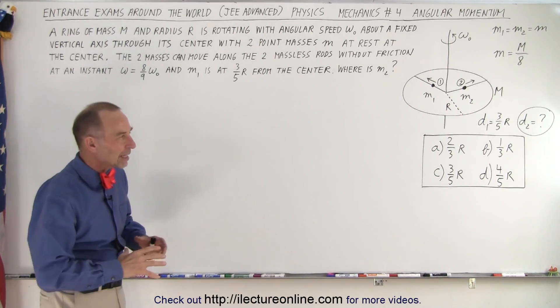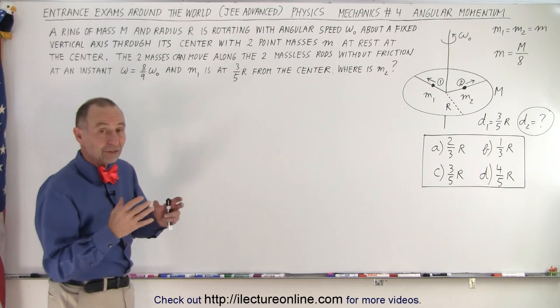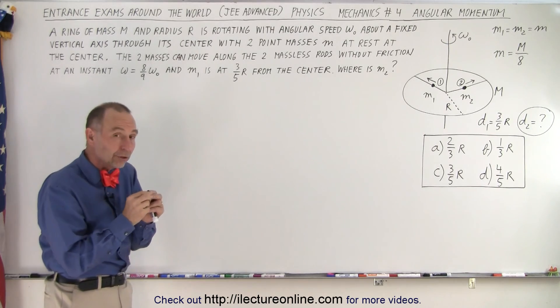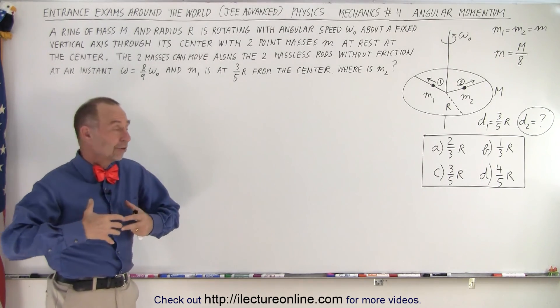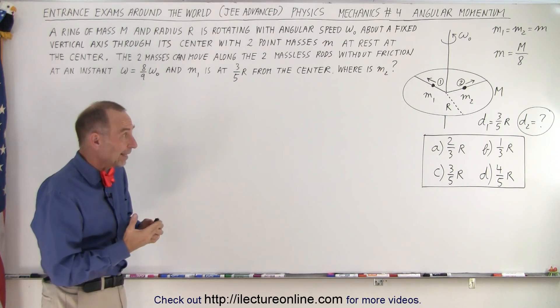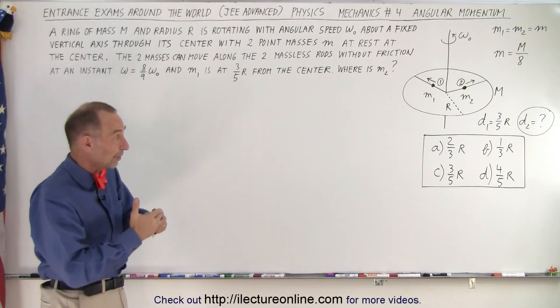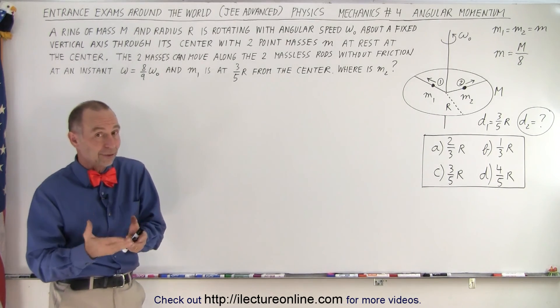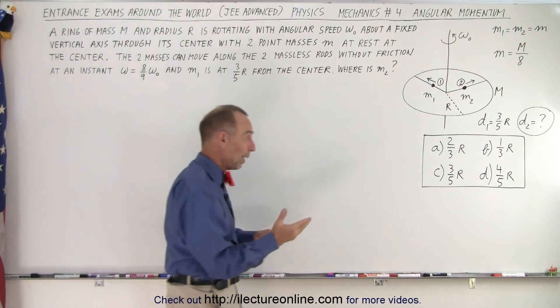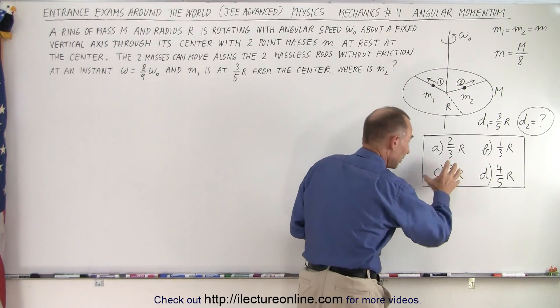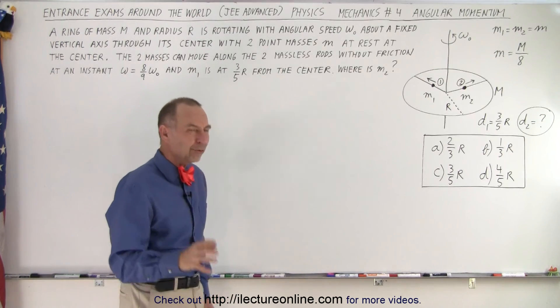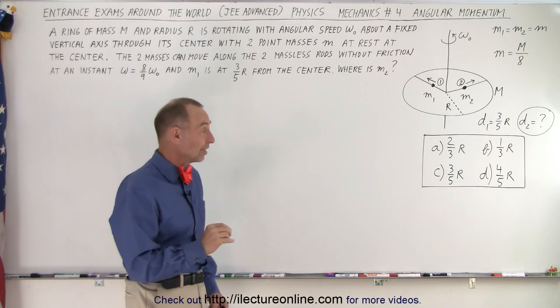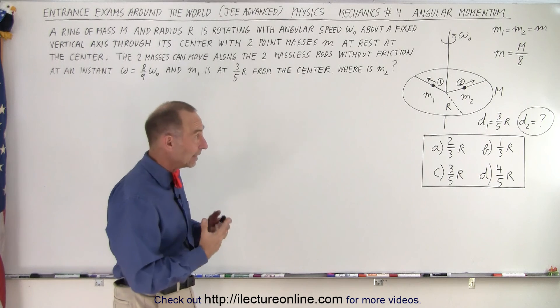Now, because of the symmetry and because the two masses start at the same point, you would imagine they're subjected to the same forces and that the second mass would move to the very same position in the same amount of time as the first mass. So I would right away think that three-fifths r would be the answer.